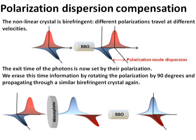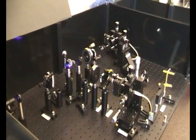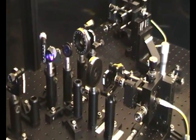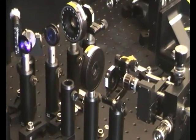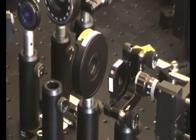we rotate the polarization by 90 degrees and propagate the photons through a BBO crystal again. The photons that were fastest in the first crystal are now the slowest and vice versa. All the photons now emerge simultaneously. The time information has been erased.